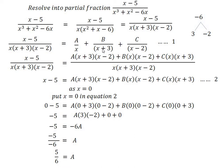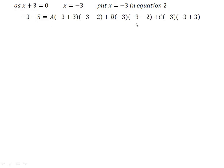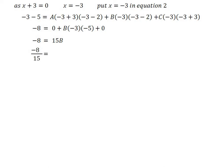To find the second unknown B, put x = -3 so the second factor equals zero. Substituting x = -3: minus 3 minus 5 equals minus 8. The first term and third term become zero. So minus 8 equals B times (minus 3) times (minus 3 minus 2), that is minus 3 times minus 5, which is plus 15. Therefore minus 8 equals 15B, giving B equals minus 8 upon 15.